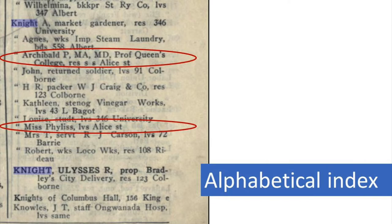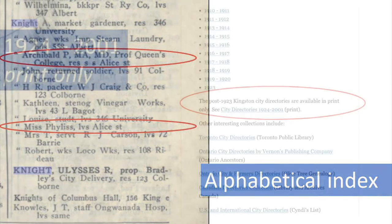The entry in the alphabetical index includes more information than the one in the street index — this one lists information about his occupation. Also in the alphabetical listing we can see another Knight living on Alice Street: this is Archibald's daughter Phyllis, who was a music teacher. The city directories do not list every resident, only those who are wage earners. Archibald's wife didn't work outside the home, so she and any children in the household aren't listed in the directory.